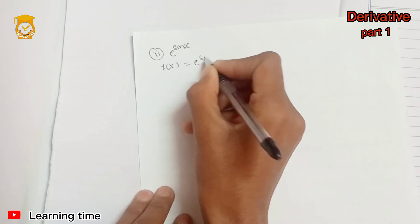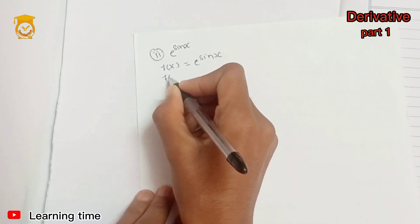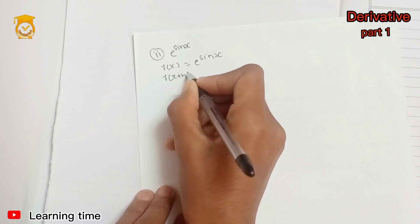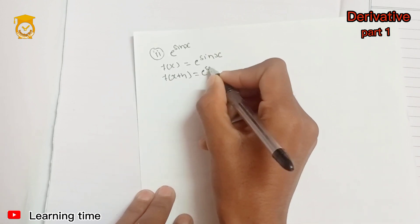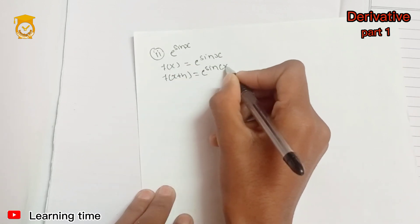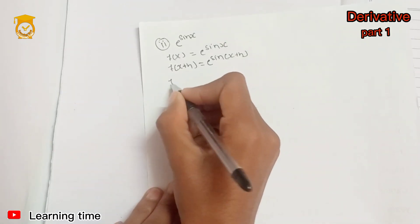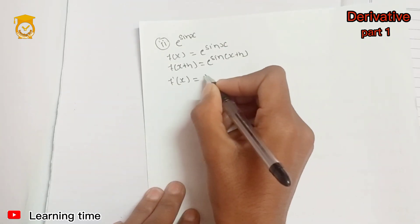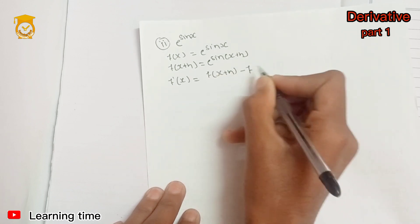For sin x, let f(x) equal e to the power sin x. Then f(x plus delta x) equals e to the power sin(x plus delta x).